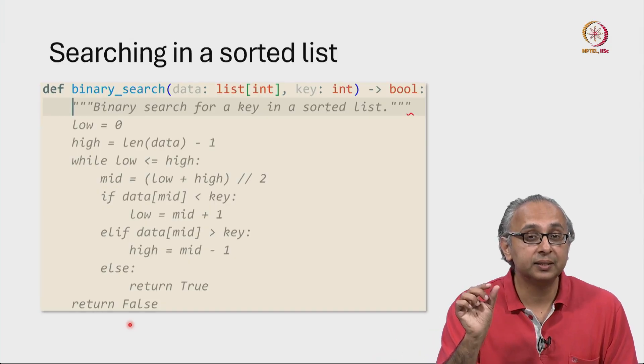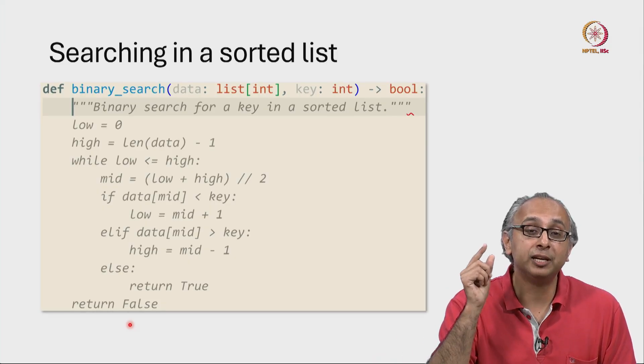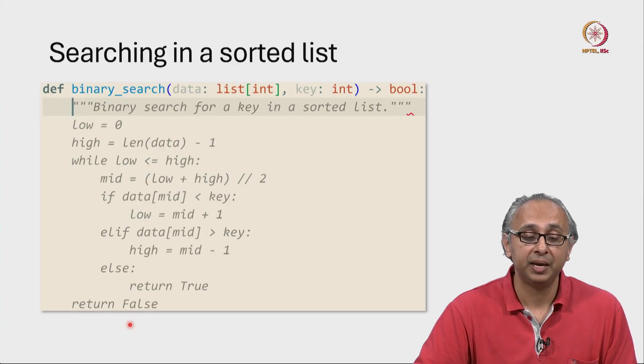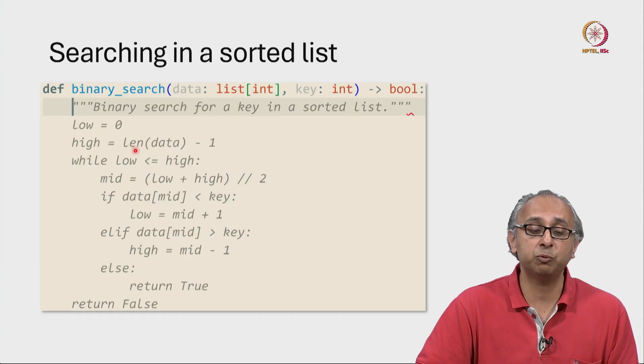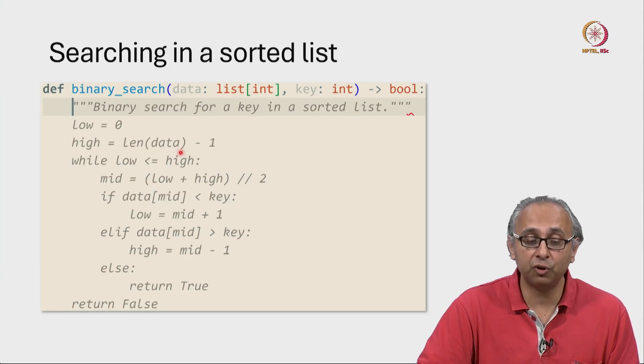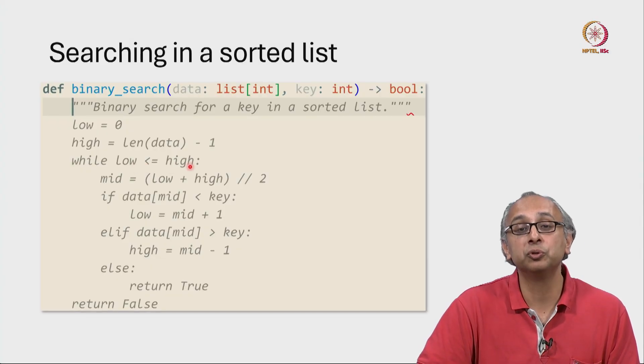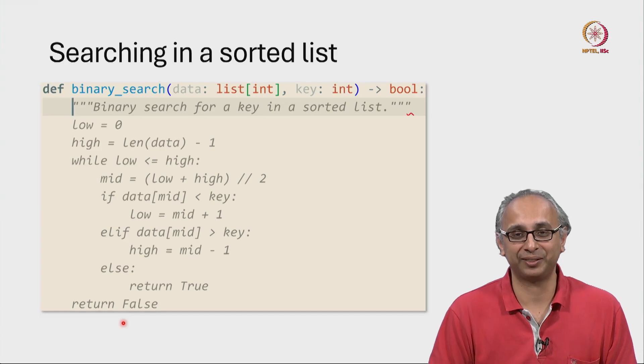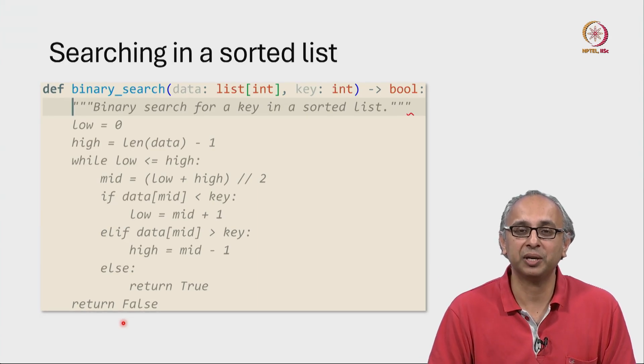Now that condition will happen immediately if the list is empty. If this list had length 0, then low would be initialized to 0 and high would be initialized to 0 minus 1, namely minus 1. And then this condition is not true to begin with. So we would immediately return false which is of course the correct thing to do because an empty list cannot contain the key that you are looking for.